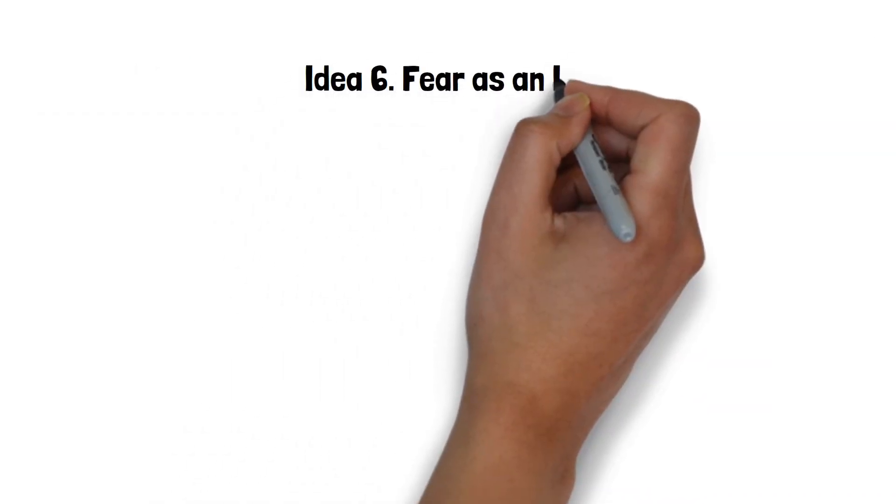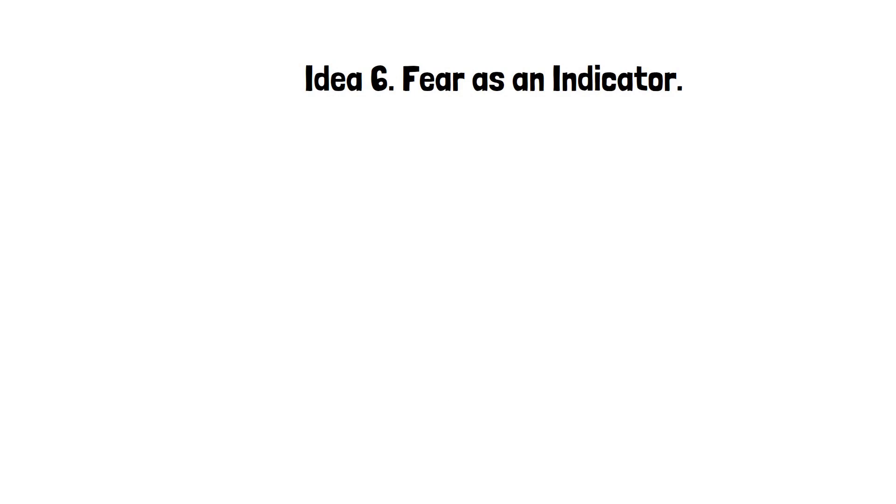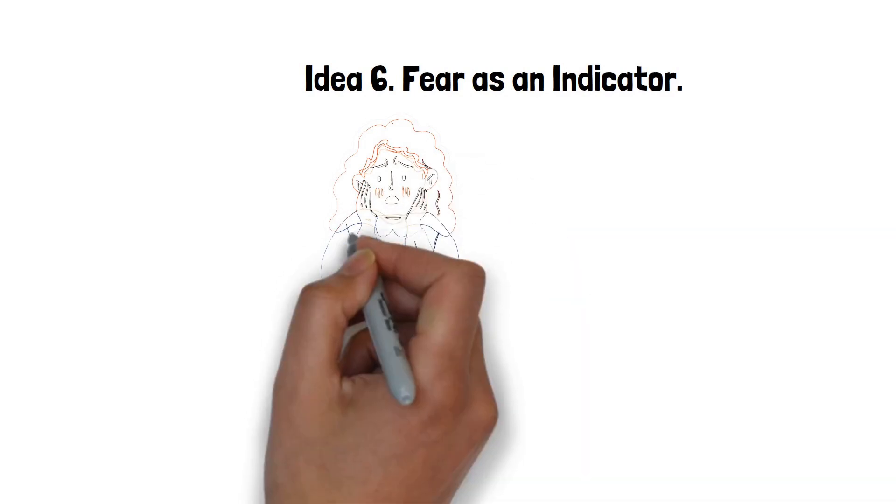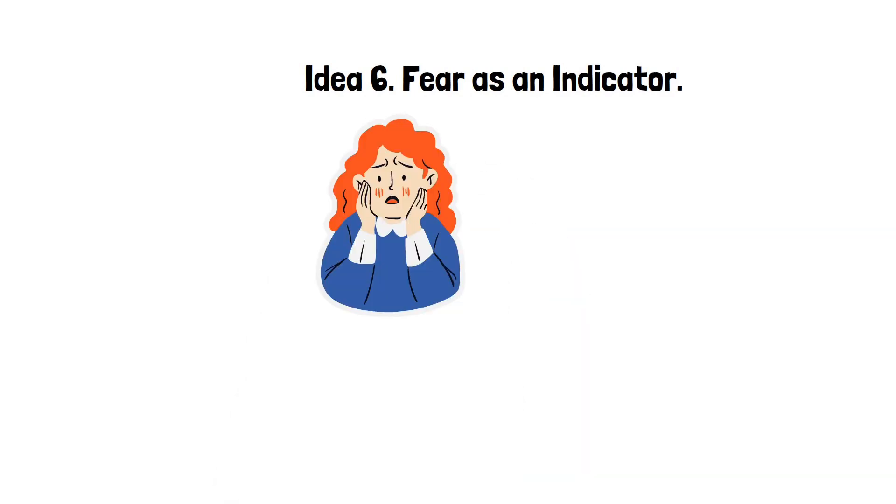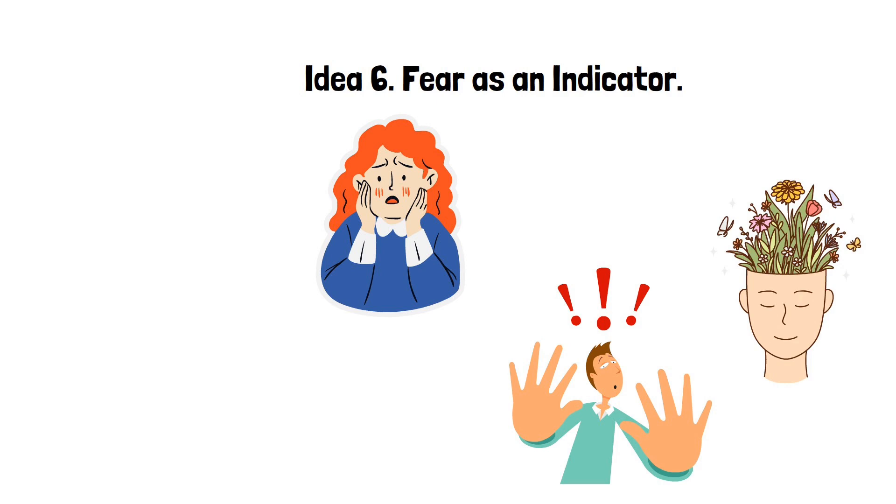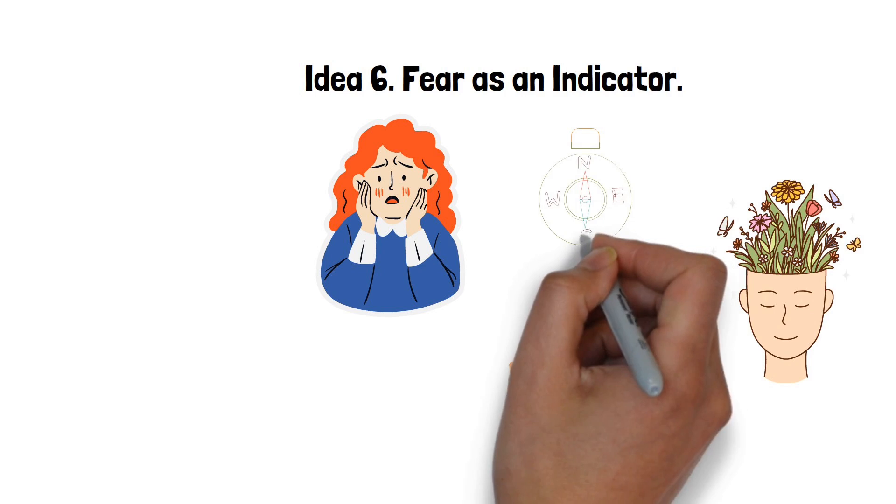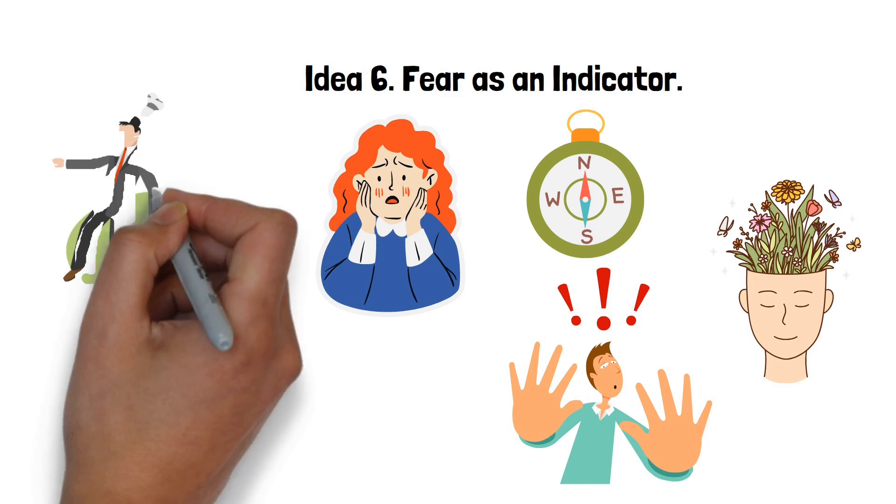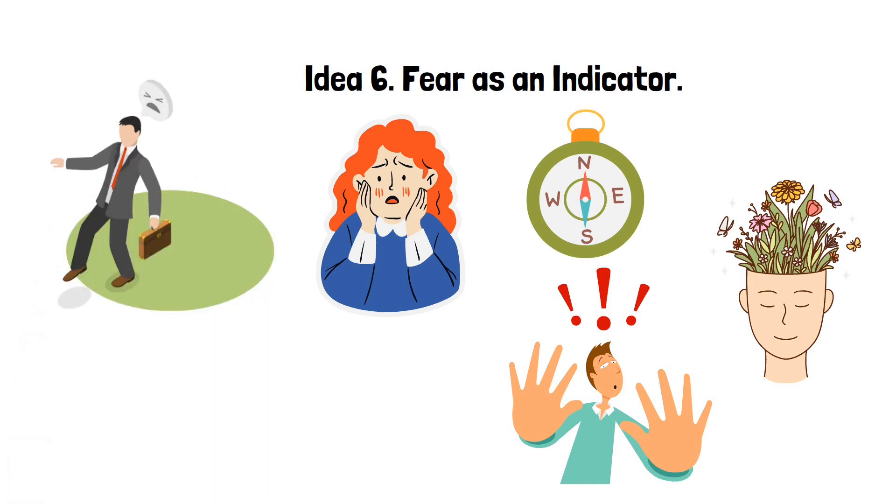Idea 6: Fear as an Indicator. Fear, as an indicator, is a unique way of looking at our fears, especially when it comes to creative work or pursuing our goals. Usually, we see fear as a signal to stop, a warning that something bad might happen. But in the context of personal and creative growth, fear can actually be a sign that we're on the right track. Think of fear as a compass, pointing you towards things that really matter to you. Often, the more afraid we are of attempting something, the more it means to us. This could be writing a book, starting a business, or even changing a career. The intensity of the fear often matches how much we care about the outcome.